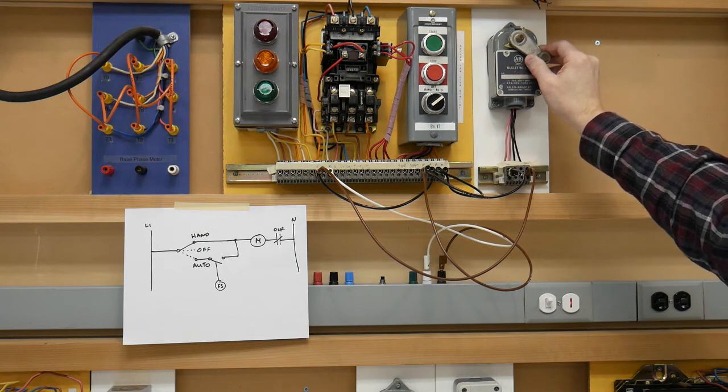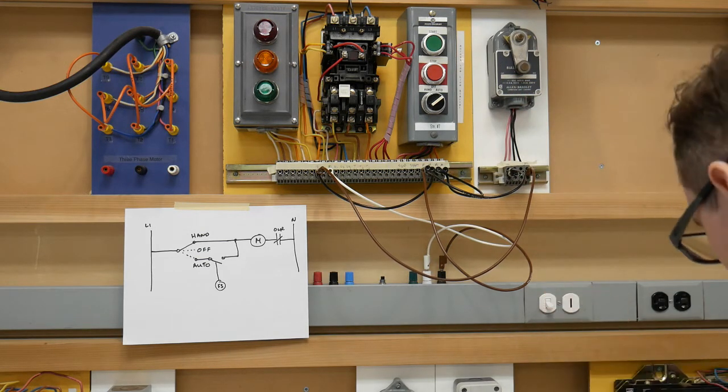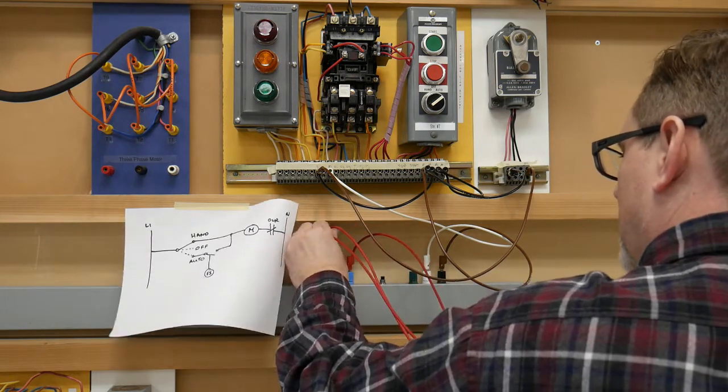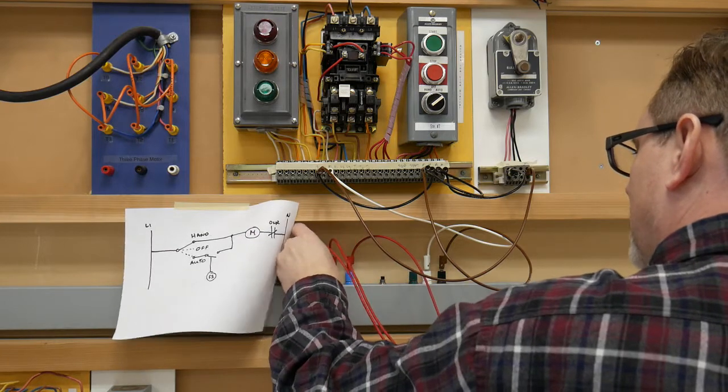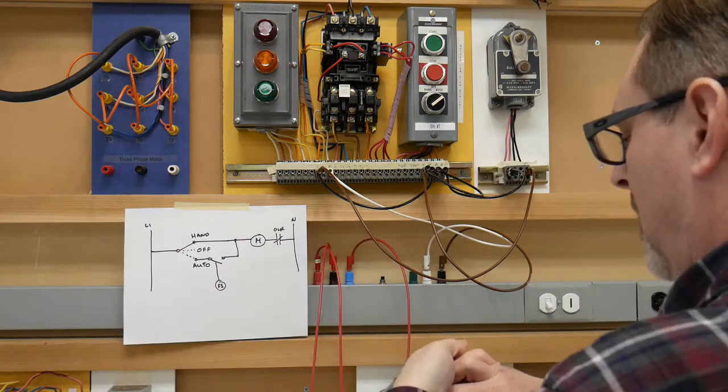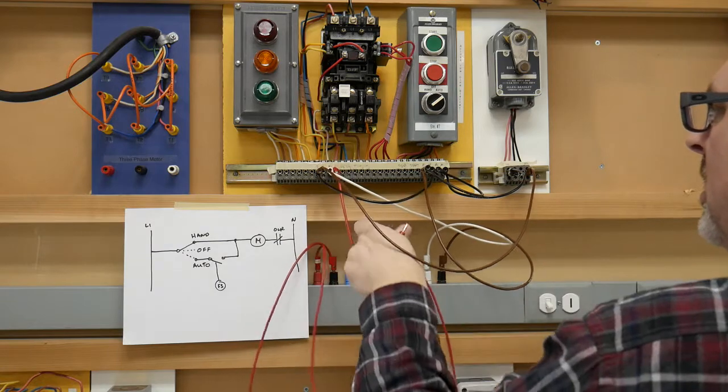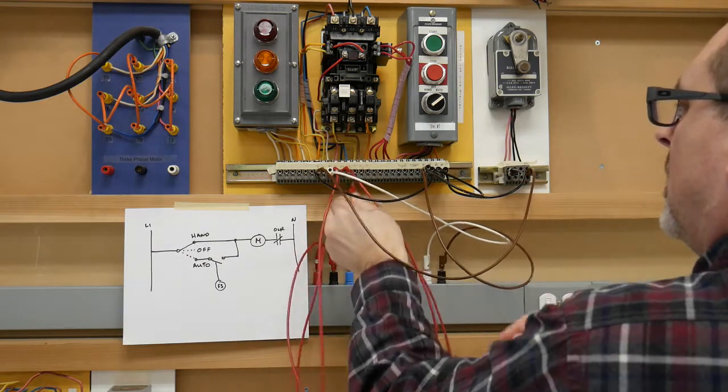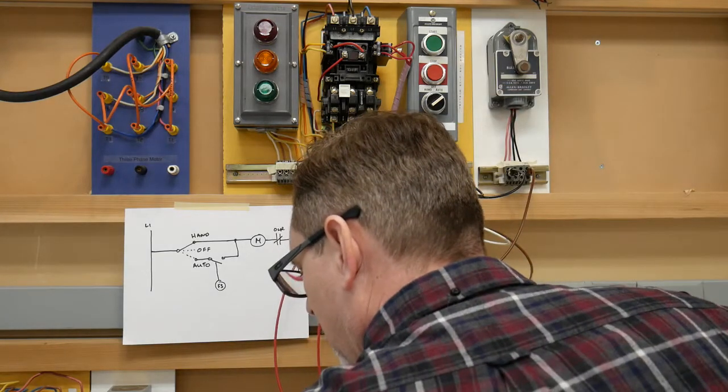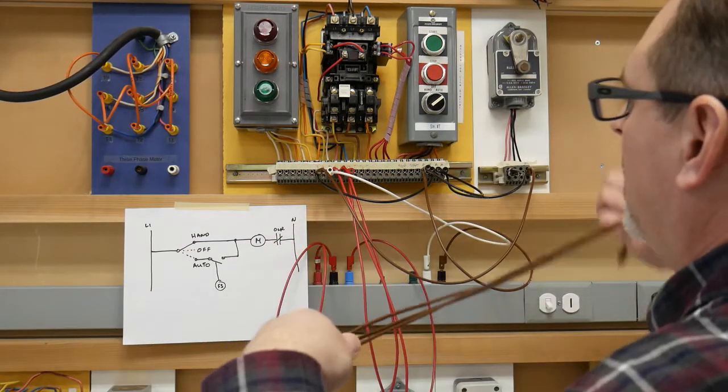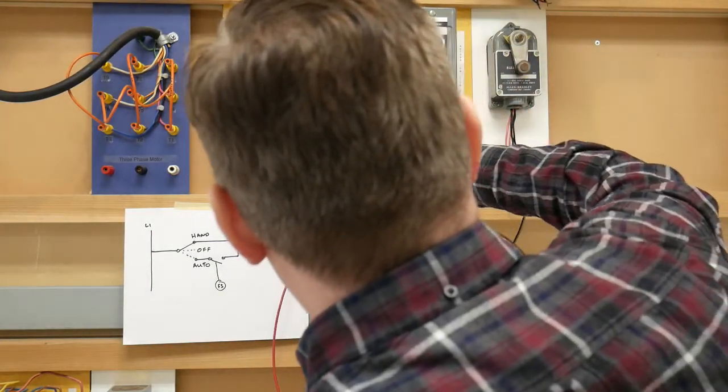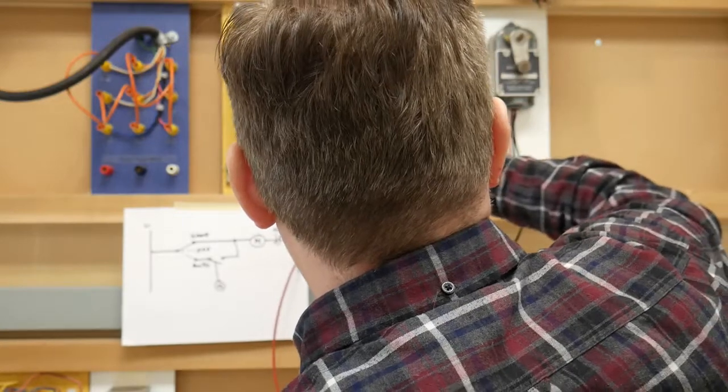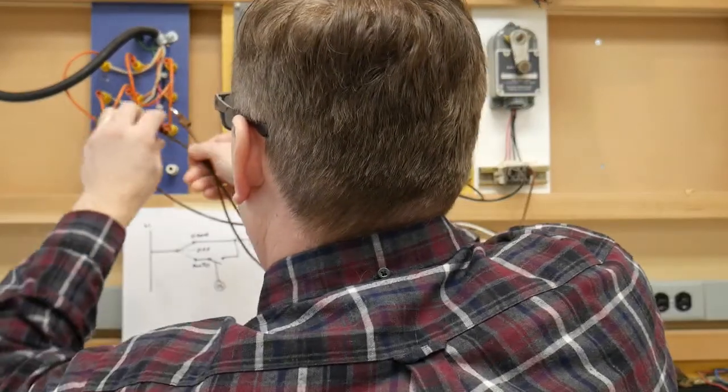And I'll hook up my power circuit so we can show that the motor actually functions and operates off of this like we've done in the past. Line one, line two, line three, and then we will come out with our T1, T2, T3 to our motor itself. That's this here, this here, and that there.